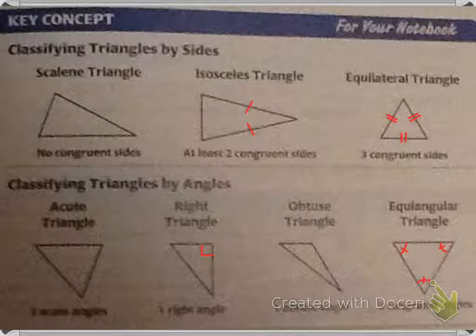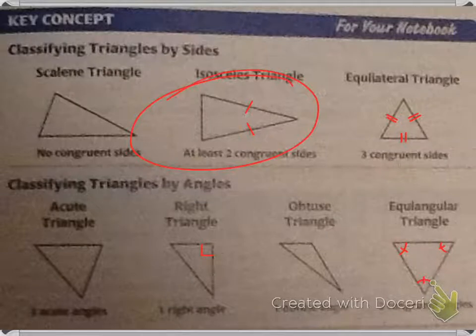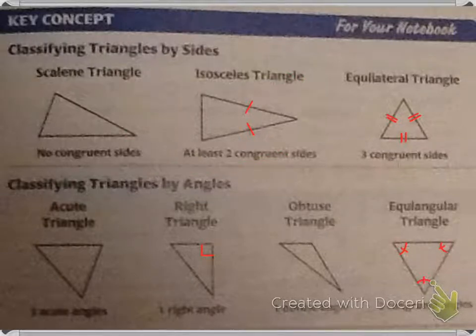You need to write down that a scalene triangle has no congruent sides. An isosceles triangle has two congruent sides — exactly two congruent sides, not 'at least' two.